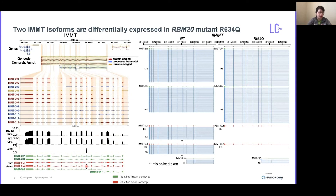In conclusion, we established a full-length isoform sequencing and computational analysis pipeline using Oxford Nanopore technologies. We successfully generated the first genome-wide full-length transcript isoform annotation for human heart cells. We tested differential expression at the transcript level and performed isoform usage analysis. One of the key findings is that we discovered aberrant splicing isoforms caused by RBN20 mutations, demonstrating the need to analyze RNA isoform expression levels rather than total gene expression levels.